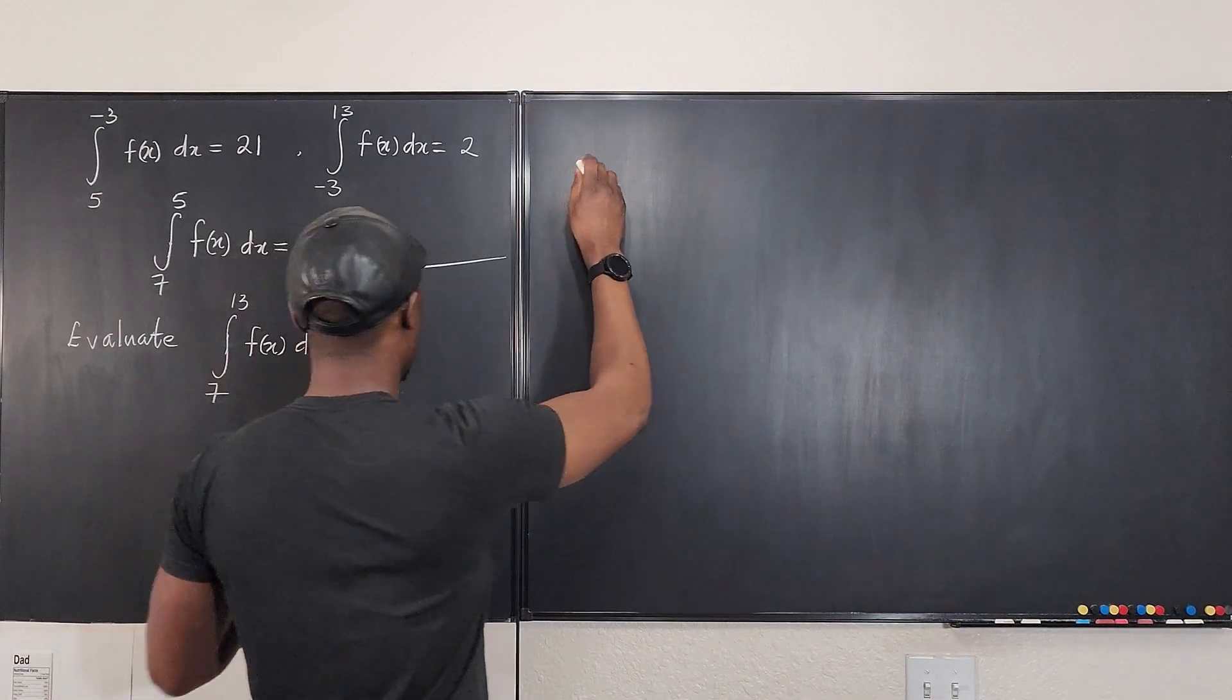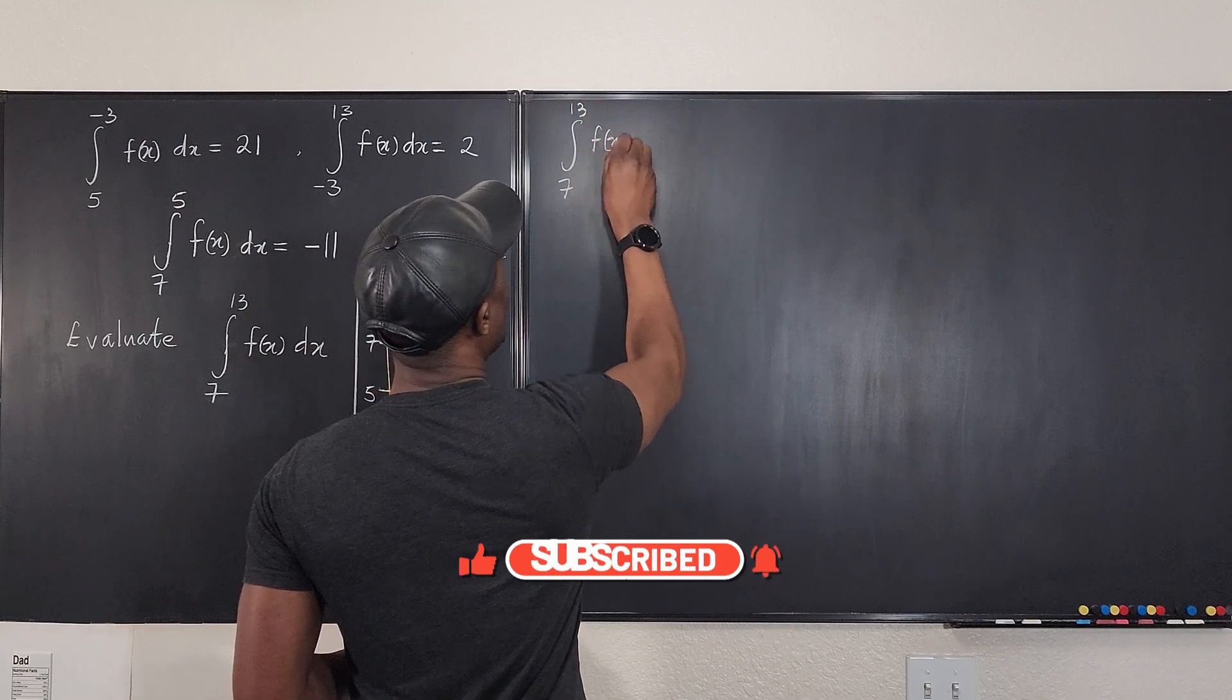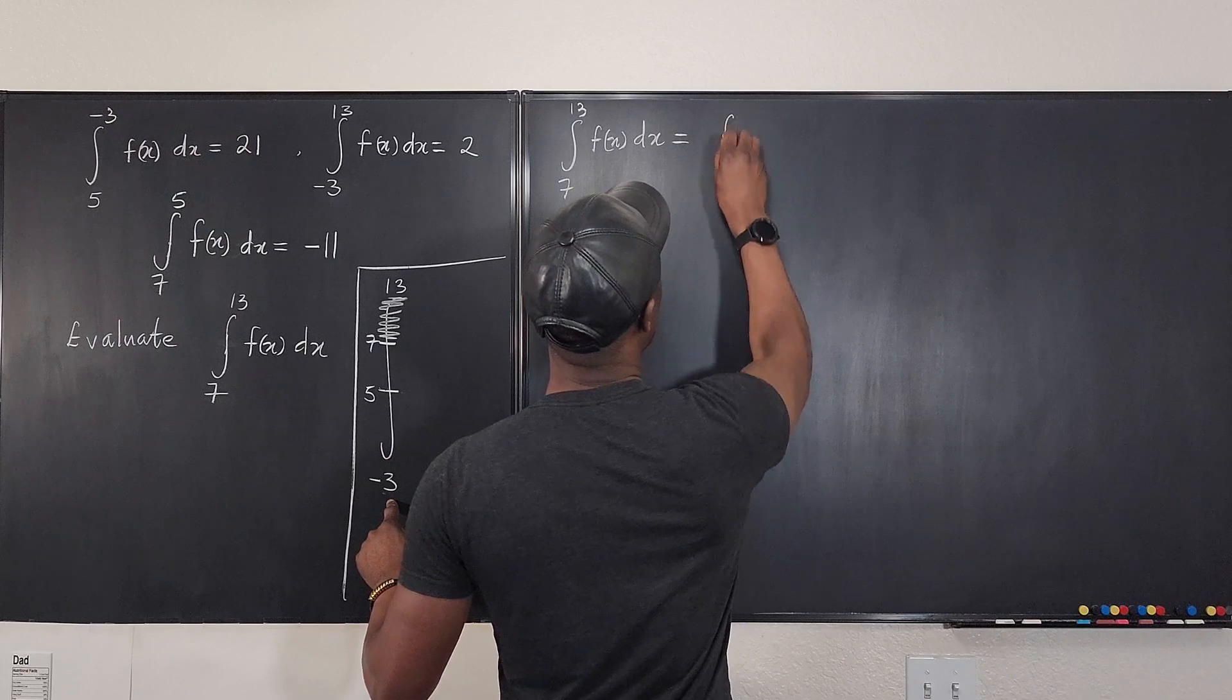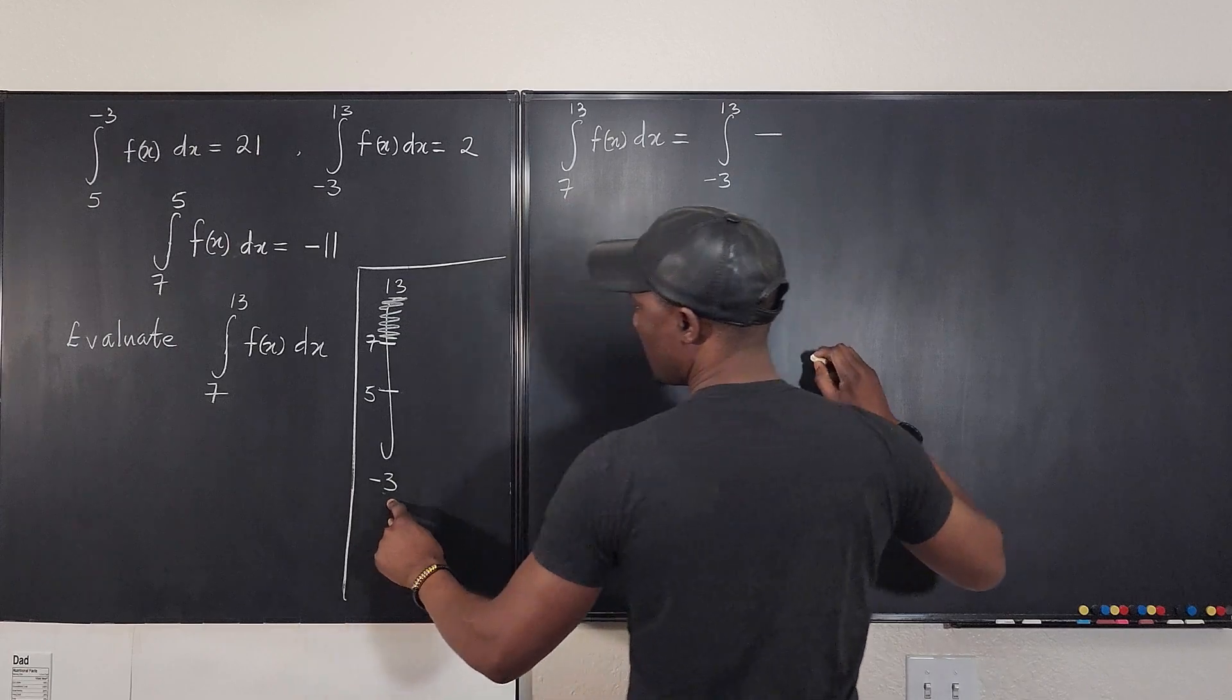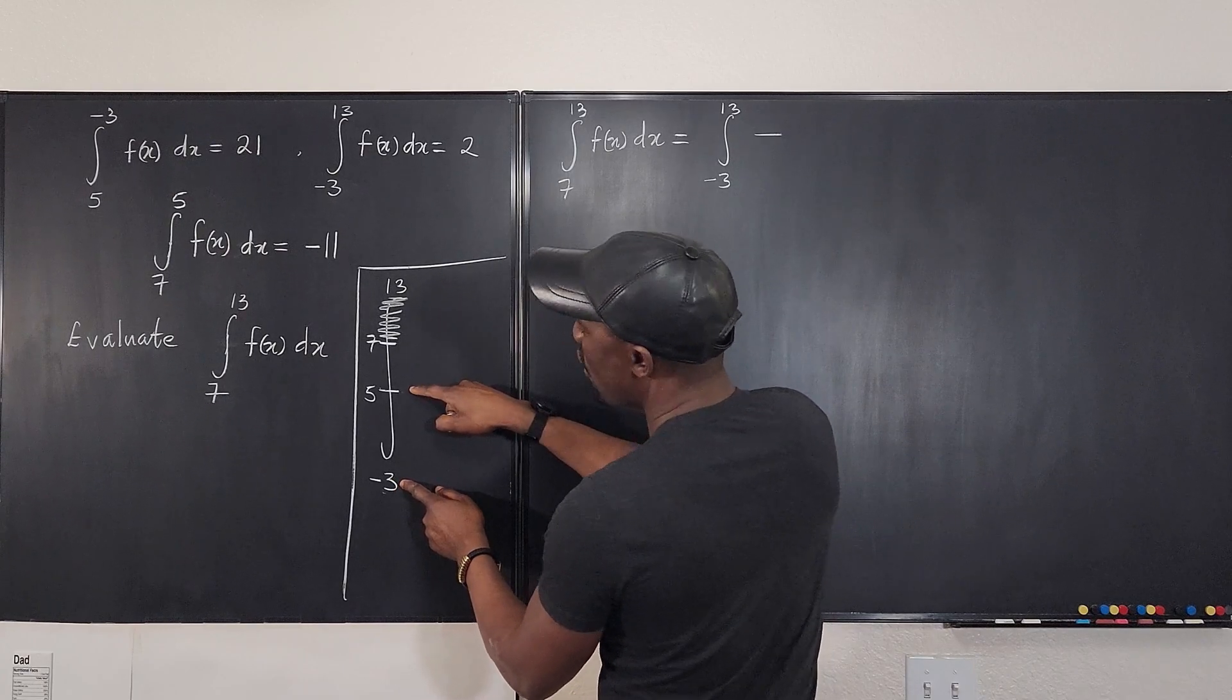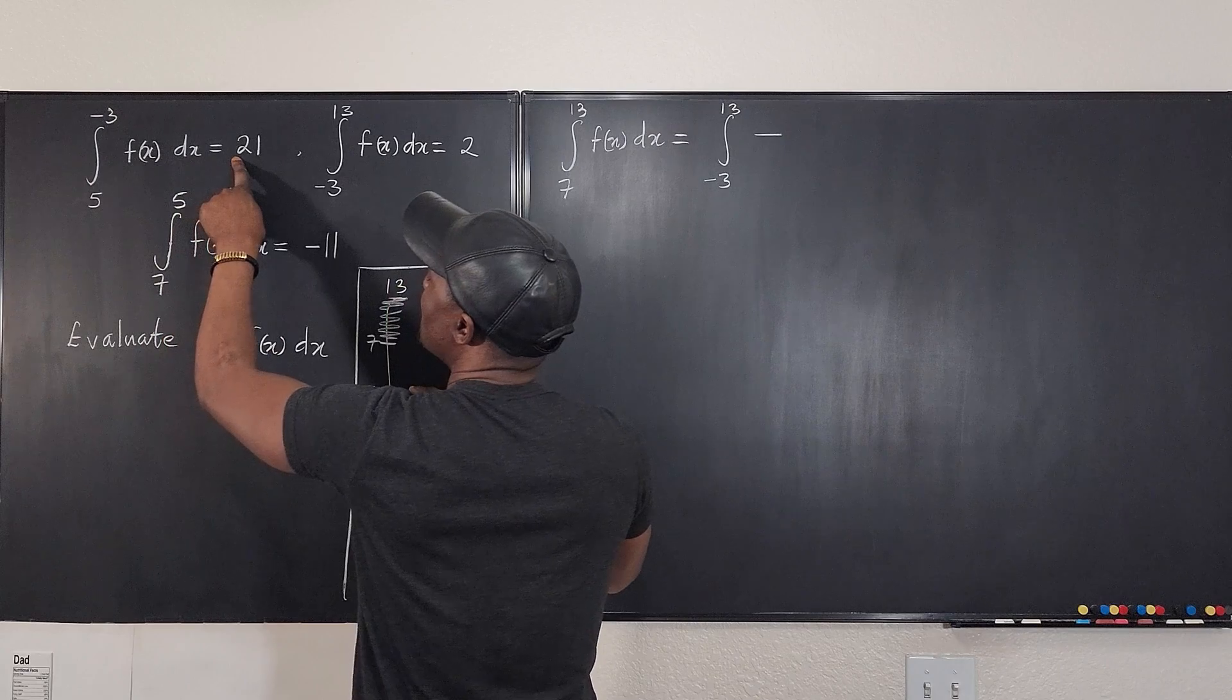So what we're looking for, we can now say the integral from 7 to 13 of f(x) dx is equal to the total which is equal to the integral from negative 3 to 13 minus... Do we have from negative 3 to 7? If we have that, we just use it. We don't have it. But we have negative 3 to 5. Oh, we don't have it. We have from 5 to negative 3. So we have to flip it, which means this becomes a negative 21.